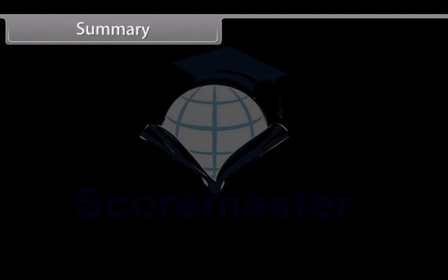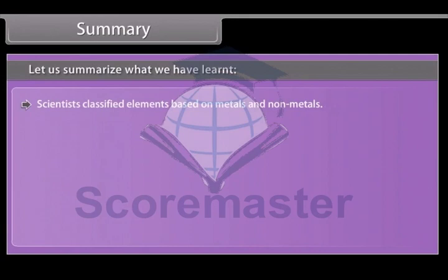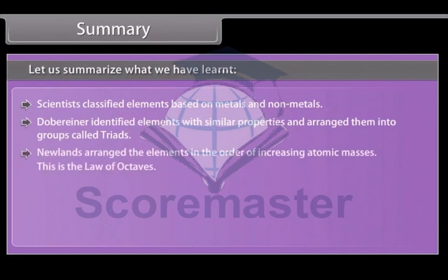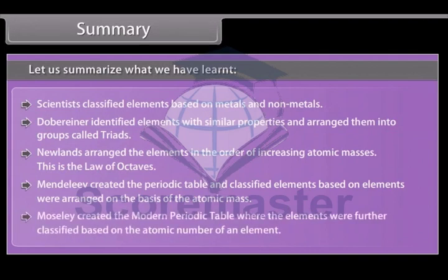Summary. Let us summarize what we have learned. Scientists classified elements based on metals and non-metals. Dobereiner identified elements with similar properties and arranged them into groups called triads. Newlands arranged the elements in the order of increasing atomic masses. This is the law of octaves. Mendeleev created the periodic table and classified elements based on atomic mass. This mostly created the modern periodic table where the elements were further classified based on the atomic number of an element.